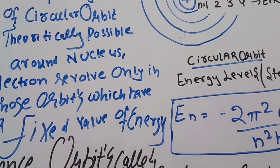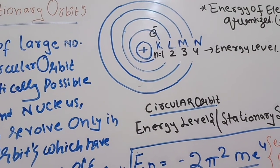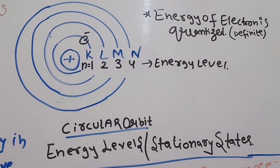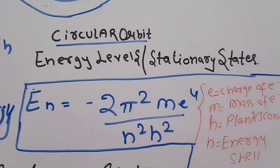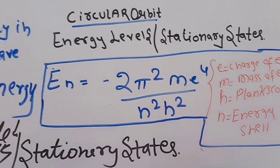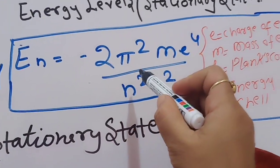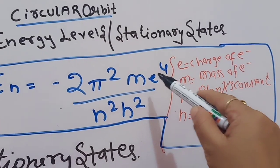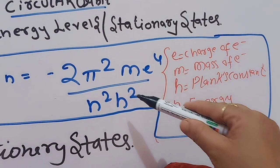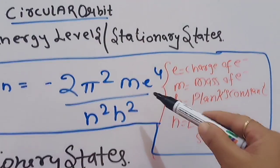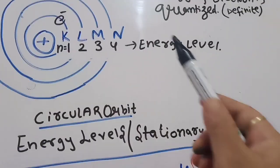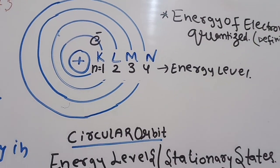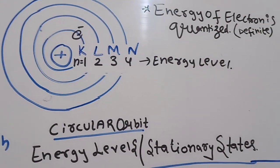If electrons jump from one energy level to another, they absorb energy; when they come back from a higher energy level to a lower one, they emit certain radiations. The energy of electrons is quantized — meaning fixed energy. Bohr's formula to calculate the energy of electrons is: E = −(2π²me⁴) / (n²h²), where e is the charge of the electron, m is the mass of the electron, h is Planck's constant, and n is the principal quantum number denoting the energy shell (K, L, M, N and so on).